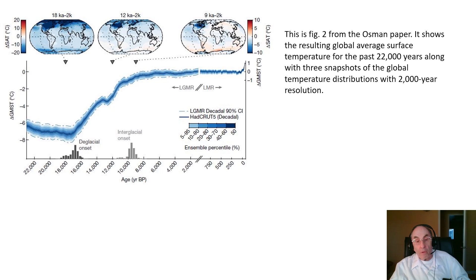Looking carefully at this graph, between about 9,000 years ago and the start of the Industrial Revolution, temperatures rose very, very slowly — about half a degree over that 9,000-year period. Then at the start of the Industrial Revolution, temperatures shot up rapidly. In less than about 140 years, temperatures across the planet rose by a full degree centigrade — twice as fast as they had risen in the previous 9,000 years. This tells us that when we started burning fossil fuels, we fundamentally changed the behavior of the planet's climate.